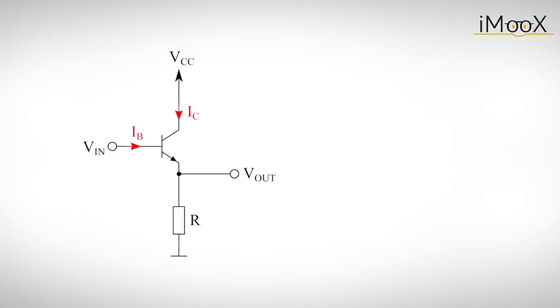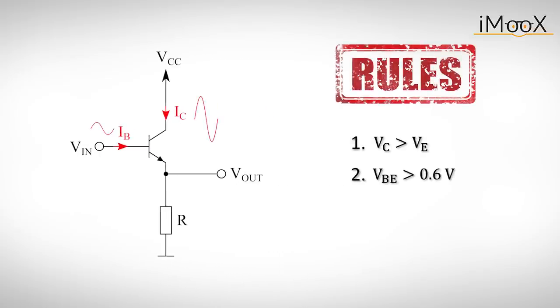As long as we stick to our rules, a varying input current will lead to a higher but proportional output current. The factor by which the current increases is called the current gain beta. We can add this phenomenon to the rules and state that IC is beta times IB. The emitter current IE is then simply the sum of the collector and the base current.